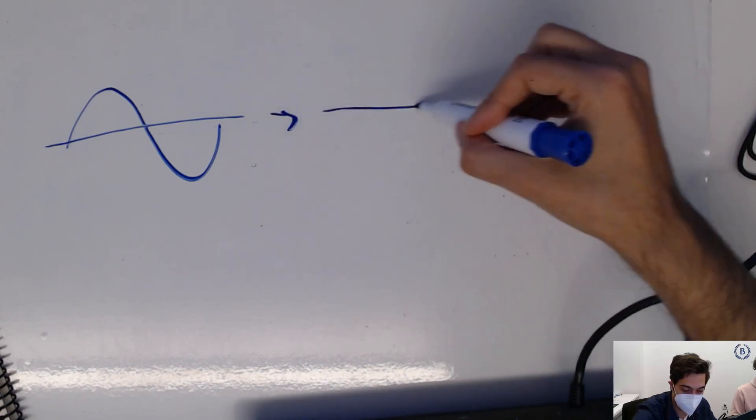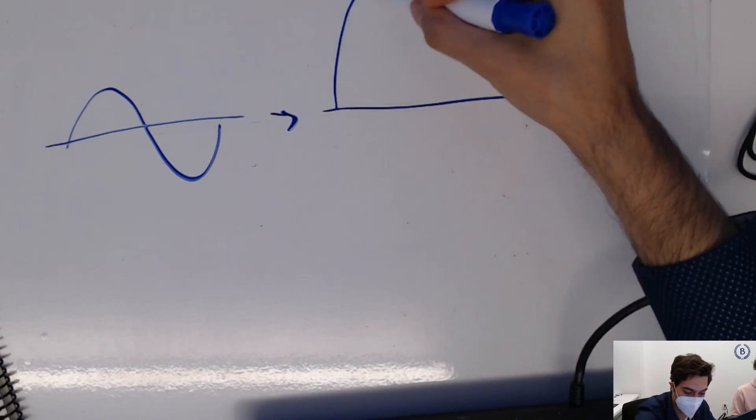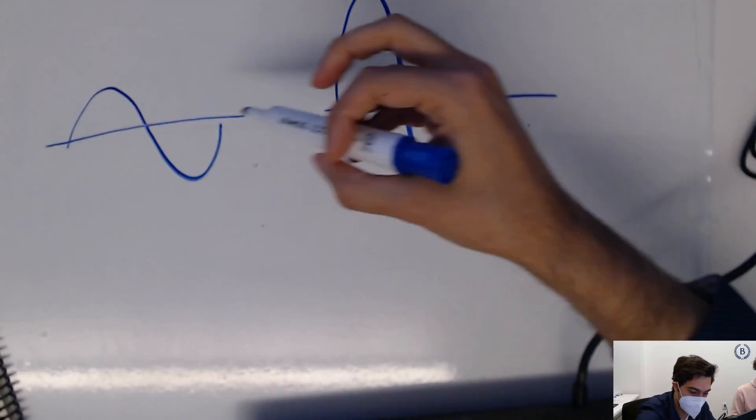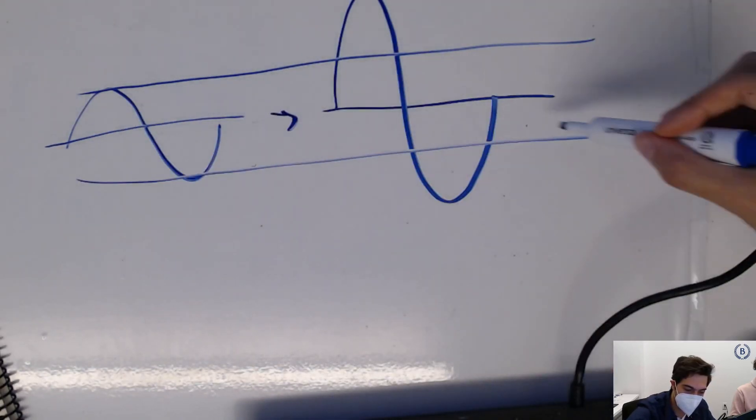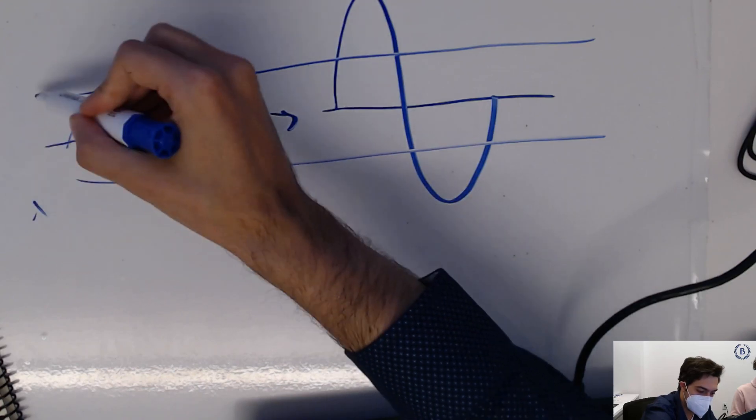So what is that going to give us? It's going to give us still a sine wave but with a much bigger amplitude. Now if this is the range negative one to one...